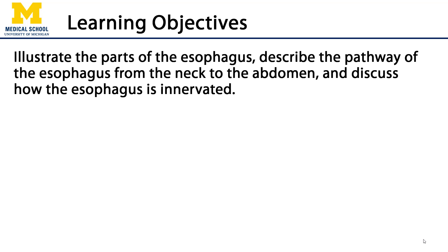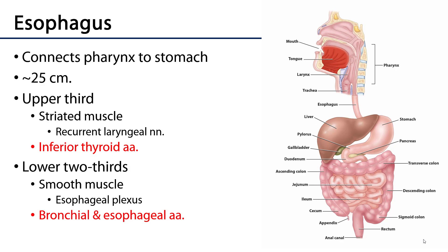The esophagus is a muscular tube that spans the distance between the pharynx and the stomach. It's approximately 25 centimeters long, and if we were to divide it into thirds, the proximal third would be striated muscle, which is innervated by the recurrent laryngeal nerves and served by the inferior thyroid arteries.